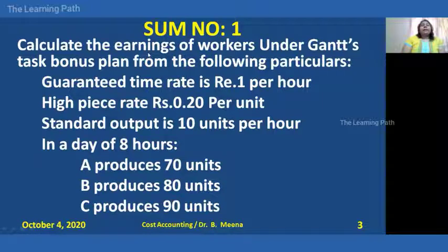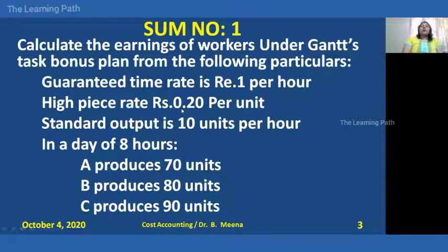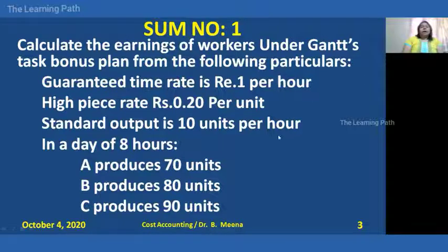Let me solve one problem for more understanding on the GANS task bonus plan. Calculate the earnings of the workers under the GANS task bonus plan from the following particulars. The guaranteed time rate is ₹1 per hour — this is used to calculate time wages for workers whose performance is below standard. The high piece rate is also given, which is used only when a worker is above the standard. The standard output is 10 units per hour, and the actual performance of workers A, B, and C is given.